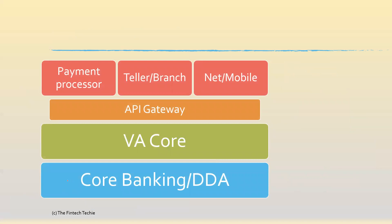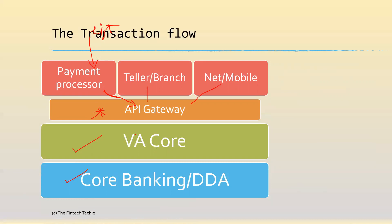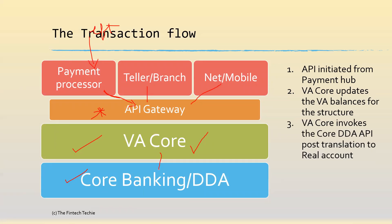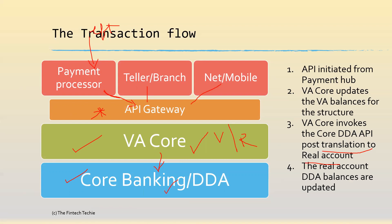Going back to our architecture, we have the DDA where the real accounts are placed, the VA core which has the virtual accounts, and then there is the API gateway, which acts as an integration layer to all the other channels that accept payments. In this example, an incoming EFT comes in for sub-dealer A1. It calls the API gateway and hits the VA core. The VA core then updates the balances of the virtual accounts for the complete hierarchy. Then it calls the API of the DDA, translating the virtual account to the underlying real account — the mapping of the virtual account to the real account is stored here. It hits the DDA and the real account balances are updated.